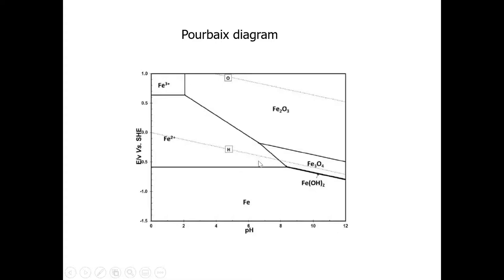Supposing we artificially bring the potential down to around minus one volt at pH 7 — that point falls in the pure iron region. The diagram tells us the iron will never form Fe2+; it will always stay as pure iron. It will be immune — completely protected against corrosion. Conversely, if we push the potential up into the positive direction at pH 7, we'll rapidly form ferric oxide Fe2O3 directly. That's the last thing we want to do if we're trying to protect the metal.